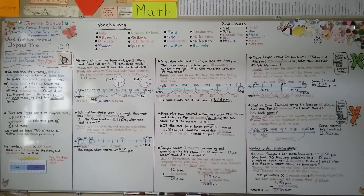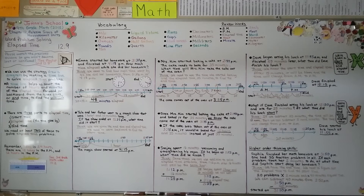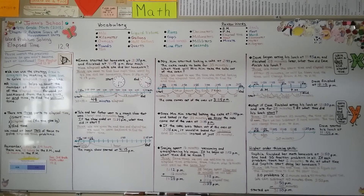Remember, when solving elapsed time problems, be very careful about a.m. and p.m. — make sure you're using the correct one. In our next lesson, 12.10, we're going to talk about mixed measures and how to convert measures to lesser units to add or subtract, or regrouping them to add or subtract. I hope I'll see you there, and I hope you have a great day!